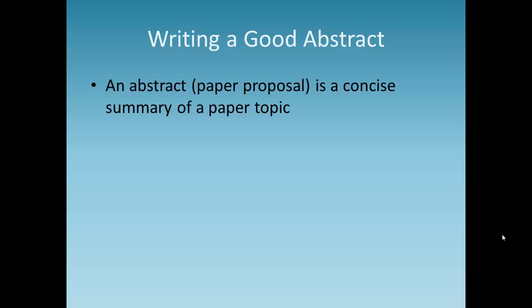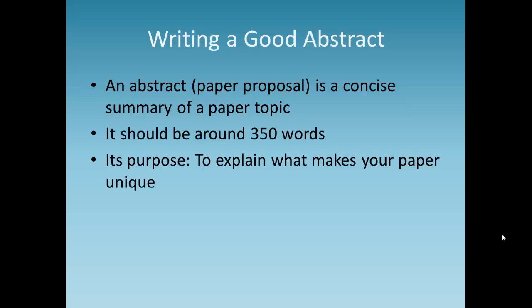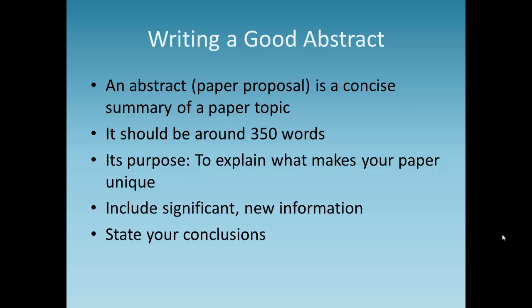The abstract is a concise summary of the paper topic. It should be around 350 words and should explain what makes your paper unique. Include significant new information and state your conclusions. You only have one chance to impress the committee, so catch their attention with your abstract.